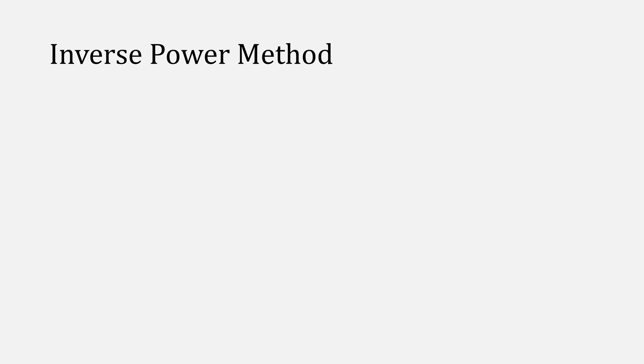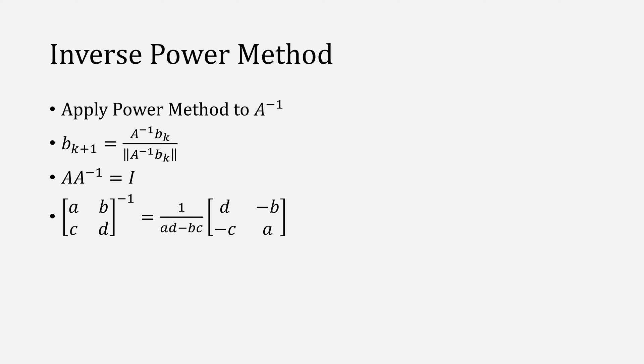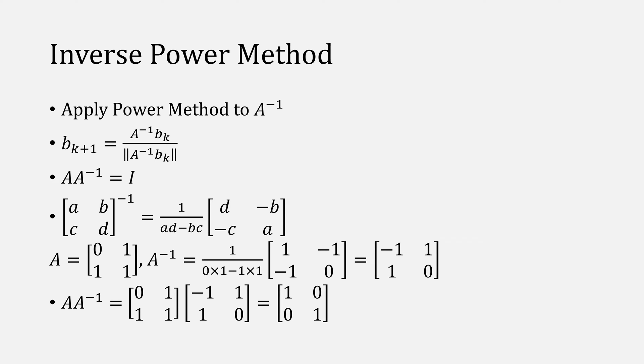This is where you want to use the inverse power method, which is simply power method applied to the inverse of matrix A. It looks something like this. The inverse of a matrix multiplied by its original will give us the identity matrix, and here's an easy way to solve for the inverse of a 2x2 matrix. If we apply it to our matrix 0, 1, 1, 1 that we've been using earlier, we get the matrix negative 1, 1, 1, 0. And indeed if we multiply our original matrix A times its inverse, we get the identity.